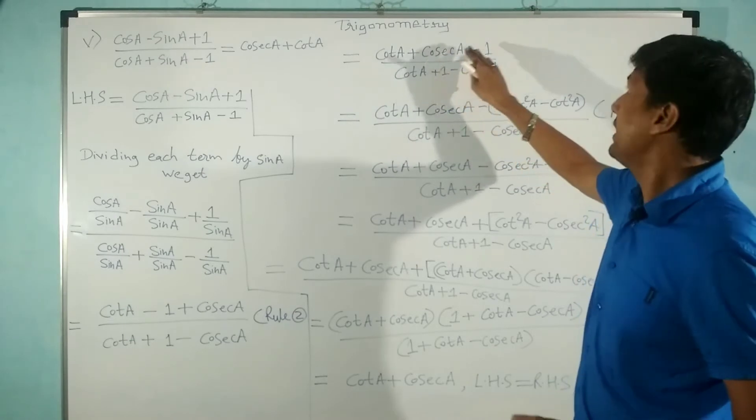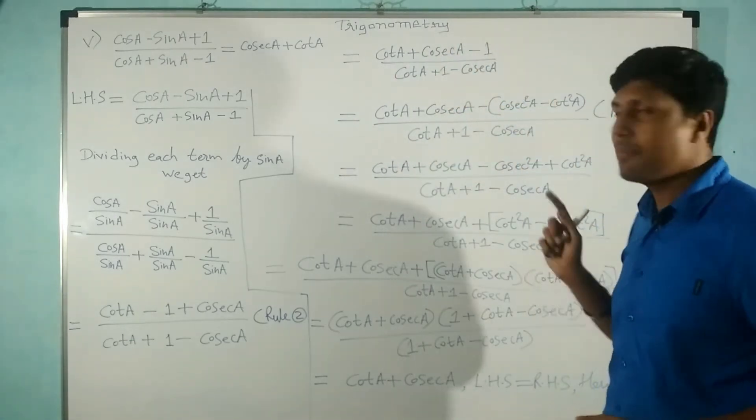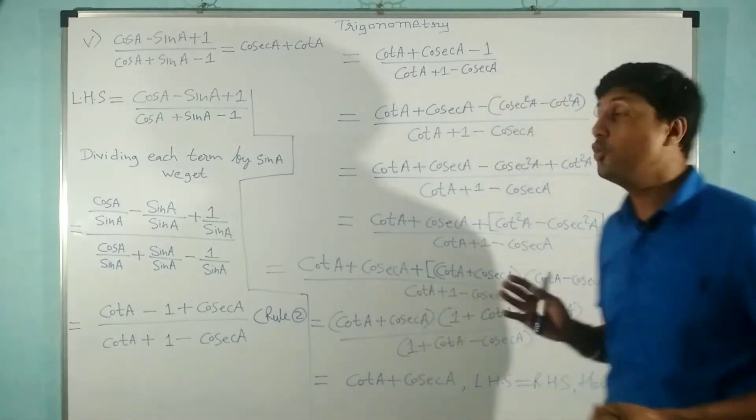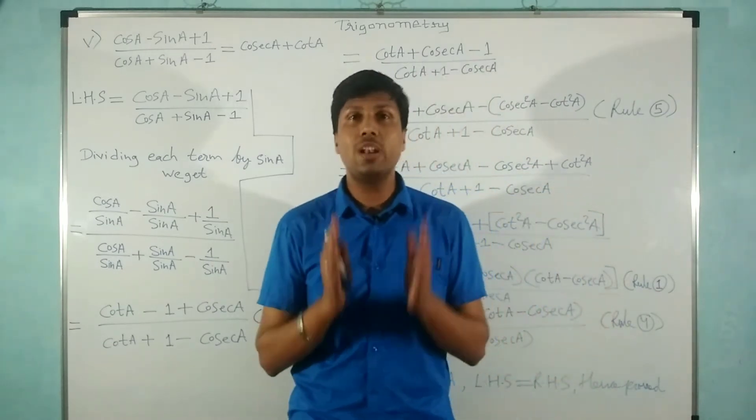Now I'm going to replace 1 by cosec² A - cot² A. That is our rule number five. Rule number five is all about replacing one by sin² + cos², or cosec² - cot², or sec² - tan².